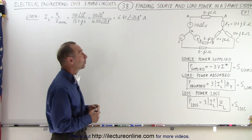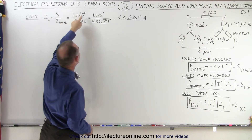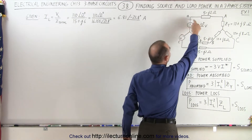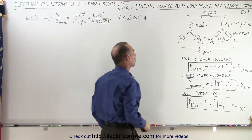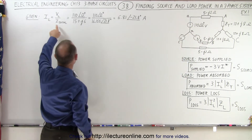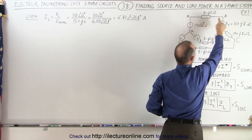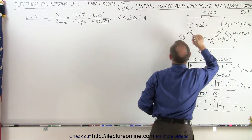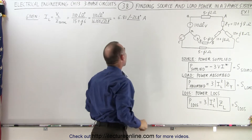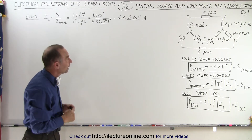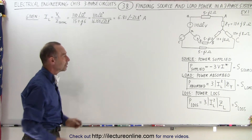We're given that the voltage is 110 volts at zero degrees phase angle at the source in the first phase, with 120-degree differences along the other three phases. We divide that by the total impedance along that line — adding the impedance on the line and the impedance of the load combined. When we calculate that, we get a current of 6.81 amps with a phase angle of negative 21.8 degrees, which is the line current providing the current to the load.